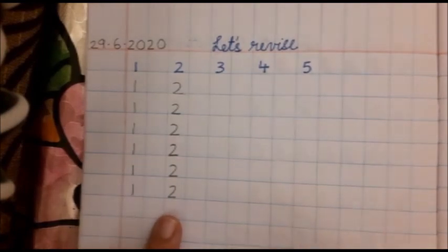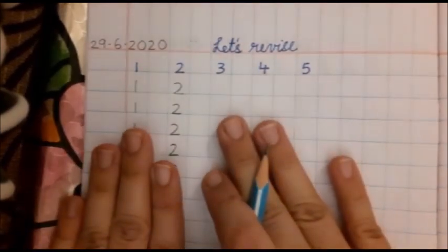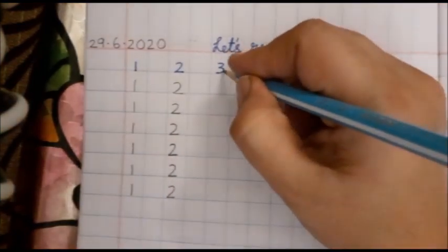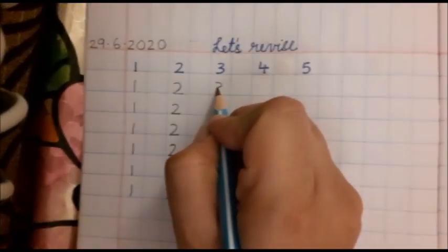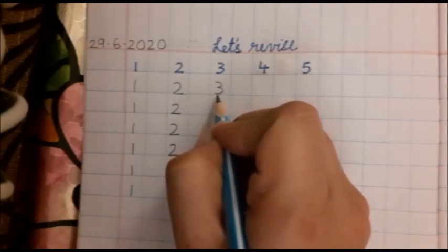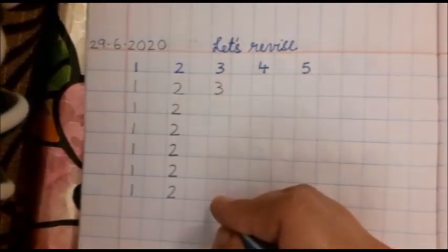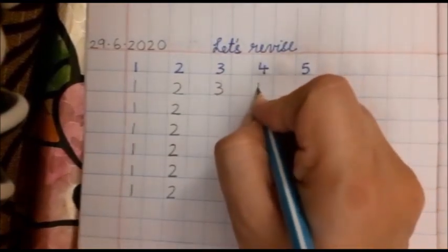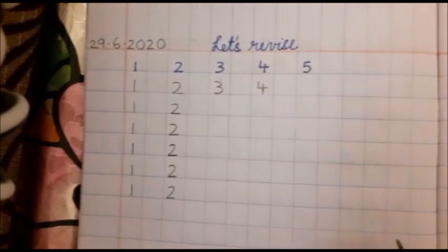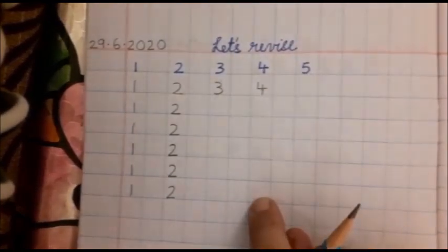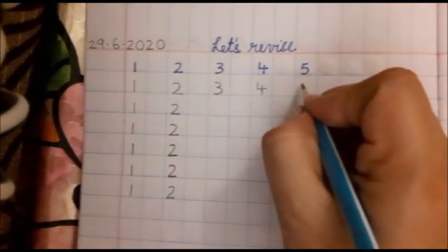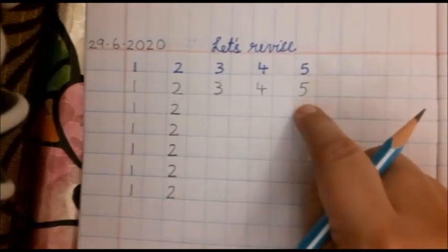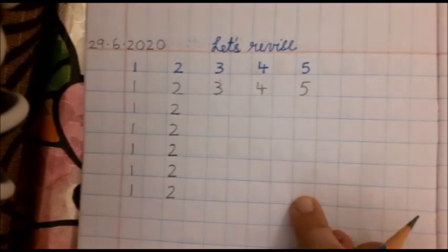See, I have written it 6 times. Now I will stop. Same way you will write number 3 like this. Touch this line and write it 6 times. Then number 4. Write it 6 times. And then number 5. Write it 6 times.